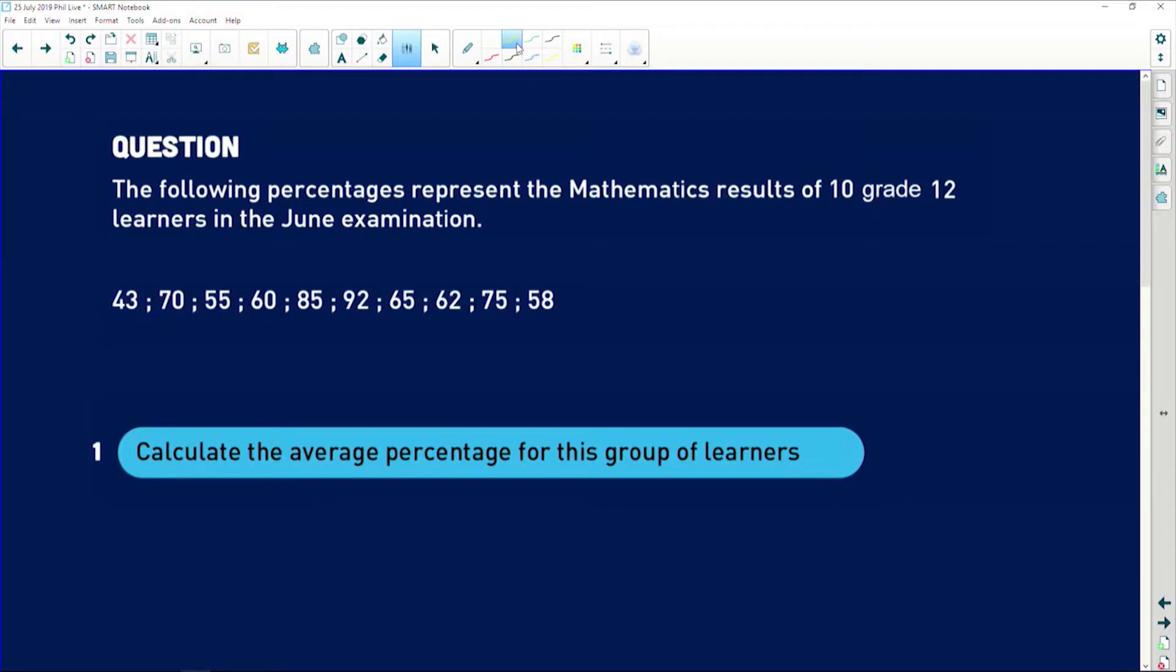It says the following percentages represent the mathematics results of 10 grade 12 learners in the June examination. So there are 10 percentages here and this is how grade 12s did in their maths.